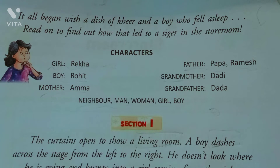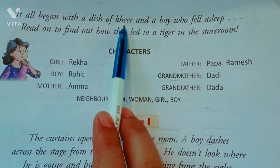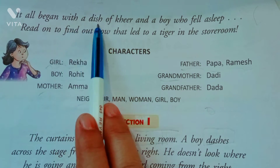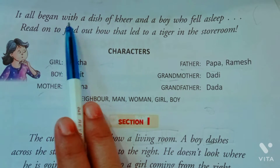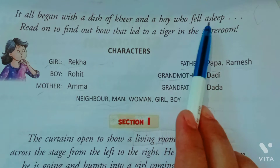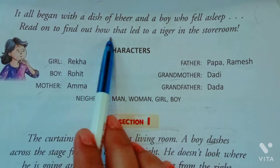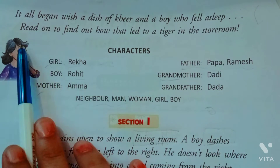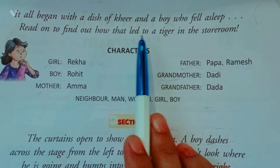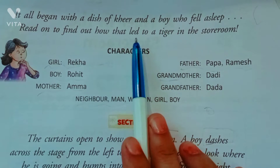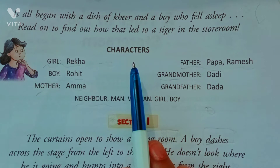So let's start the chapter. It all begins with a dish of kheer — yani ki story kahaan se start hoti hai, dish of kheer se. Kheer jo hai wo chawal aur doodh ki banti hai. And a boy who fell asleep — jo ladka hai wo so gaya. Read on to find out how that led to a tiger in the storeroom.